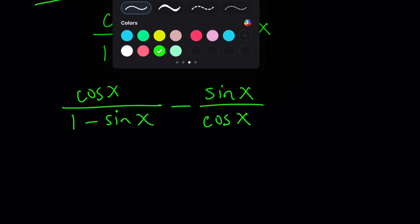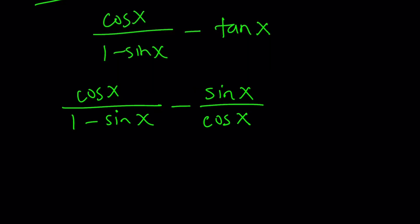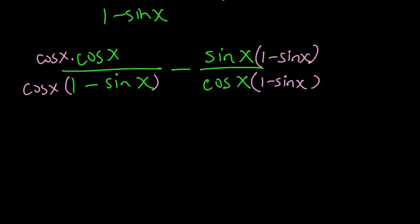Doesn't it make sense to make a common denominator? It does, right? So let's do it. So multiply the first one by cosine x and the second one by 1 minus sine x. And that will make a common denominator. And what happens to the numerators? We just multiply them.